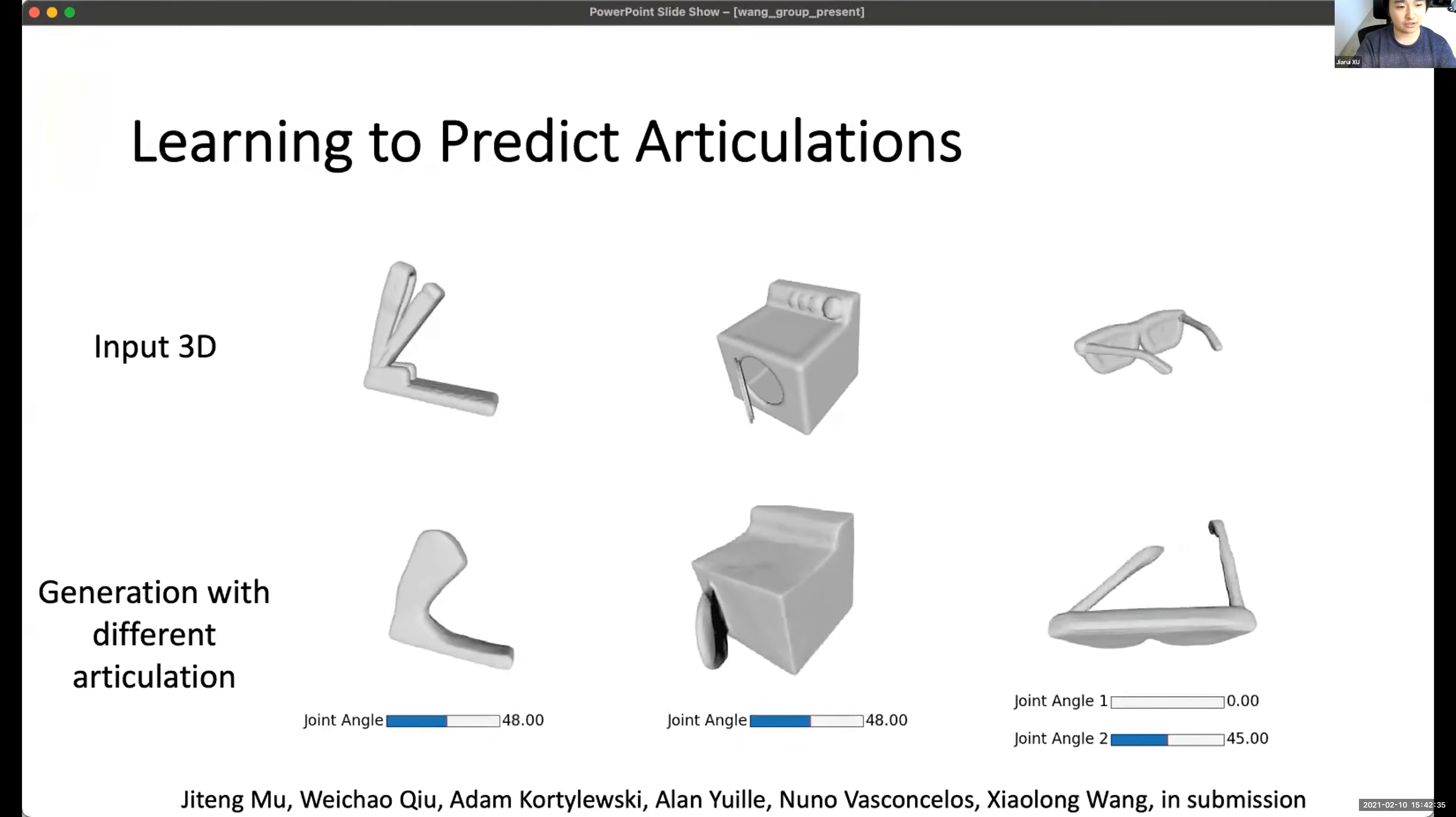This is another project about predicting the articulations. We mean how to predict the angle of a specific object, for example, the angle of the stapler, is it maybe 19 degrees or 10 degrees open, or the door of the washing machine and the sunglasses, how the sunglasses is closed or open.